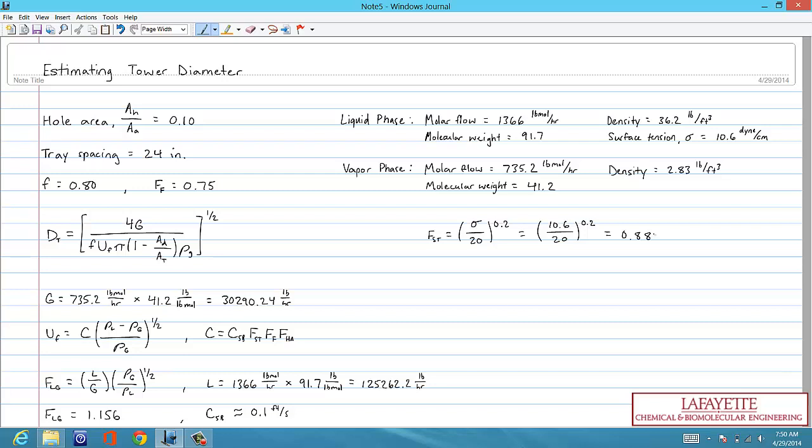The foaming factor, f sub f, was given as 0.75. For sieve trays, the hole area factor, f sub ha, depends on the ratio between the total hole area on a tray, a sub h, and the active tray area, a sub a.